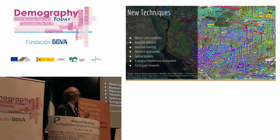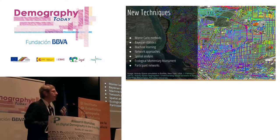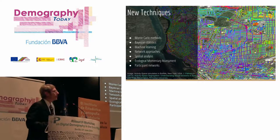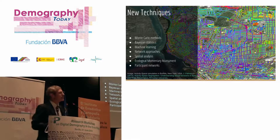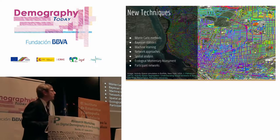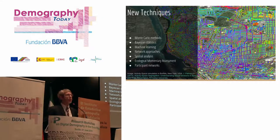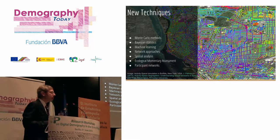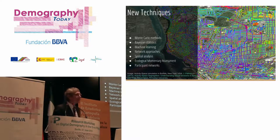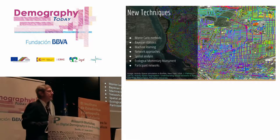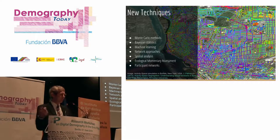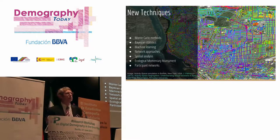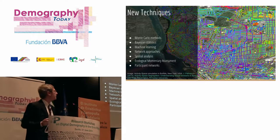This combination of new data and new tools has also led to a variety of new techniques for analyzing data. These include Monte Carlo methods, which take advantage of better access to computational power; Bayesian statistics; machine learning; network approaches; more powerful and accessible spatial analysis; ecological momentary assessment, where we can survey people in different spatial and temporal contexts; and participant networks, which relate to the citizen science approaches I'm using, networking participants so they can communicate with each other and become part of scientific exploration.